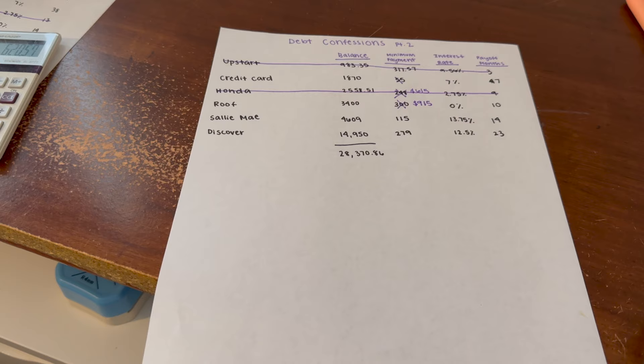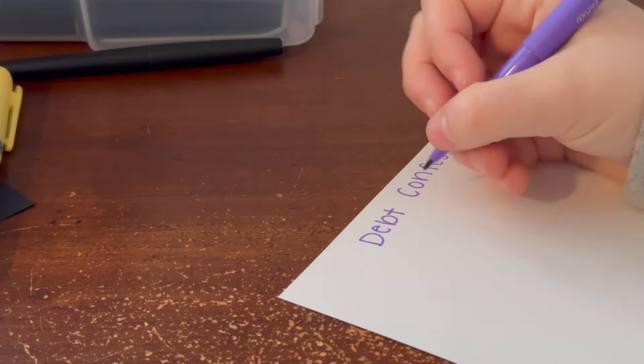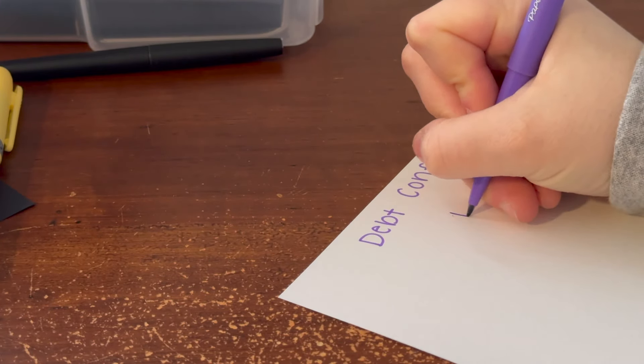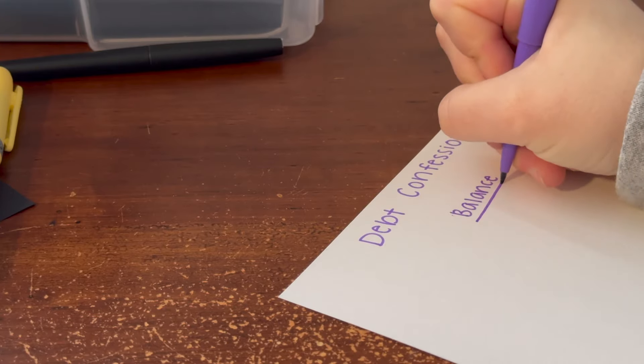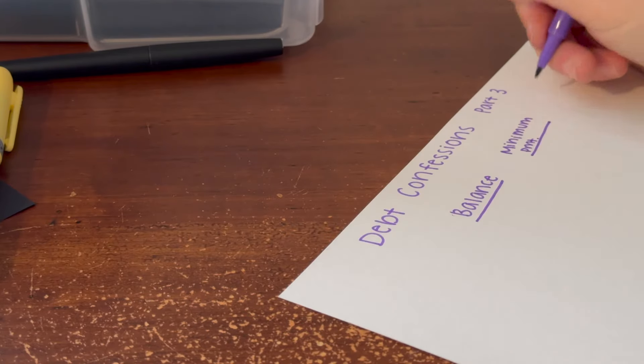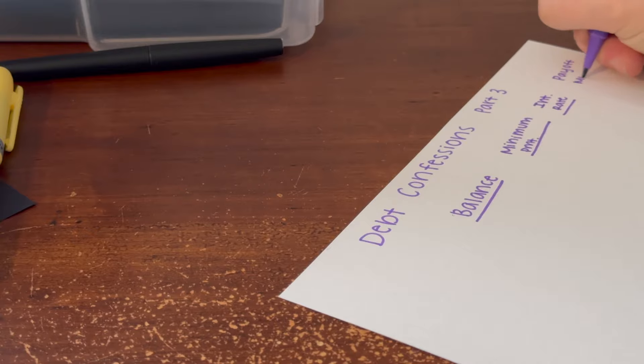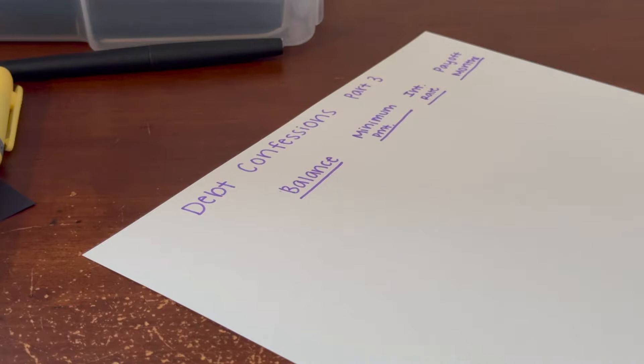Let's go ahead and make our new debt confession sheet. I'm going to start out by doing the titles. The first one is going to be Balance, Minimum Payment, Interest Rate, and Payoff Months. Over here to the side I'm going to list out my debts.